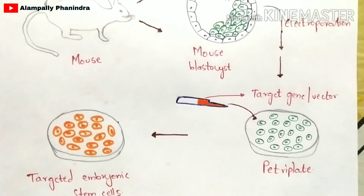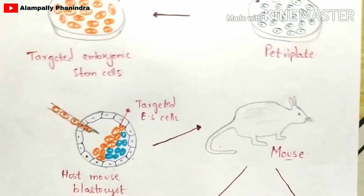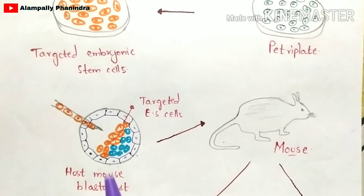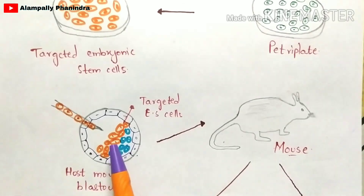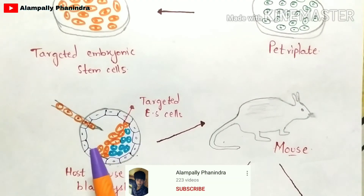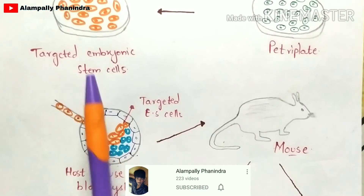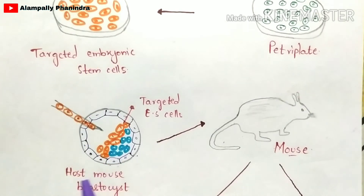Now with these targeted embryonic stem cells, you select another fresh mouse. You extract the blastocyst from that host mouse, and then using a micro pipette or micro injection, you inject the total targeted embryonic stem cells into this host mouse blastocyst.